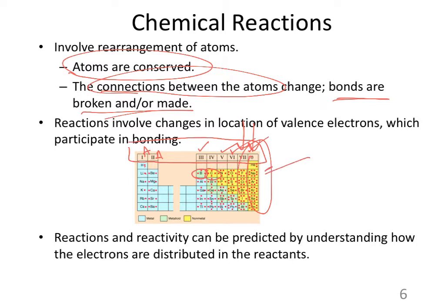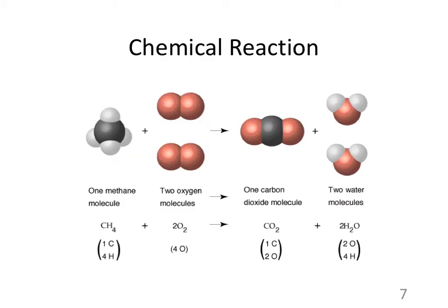Eight valence electrons is considered a full outer shell. It is a stable condition for elements to exist in. And so, I always say the elements are noble gas wannabes. All these other elements are really striving to get full outer shells of electrons. And so, that's usually the driving force for chemical changes.